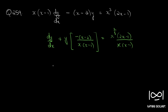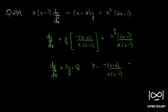This is now in the standard form of a linear equation, where p and q should be either constants or functions of x alone. Here p is minus(x minus 2) divided by x(x minus 1), and q is x squared times (2x minus 1) divided by (x minus 1).